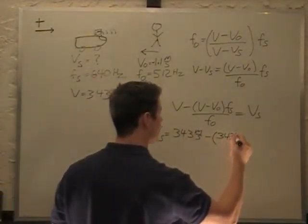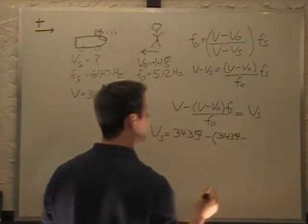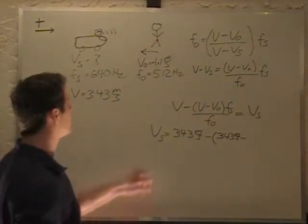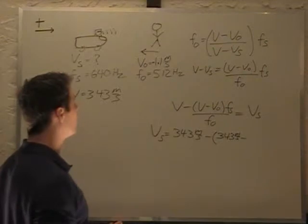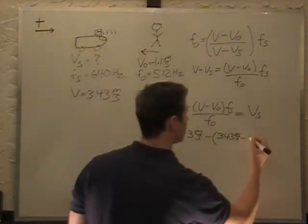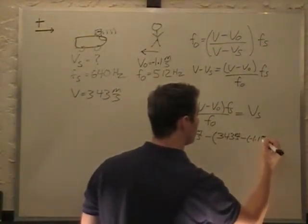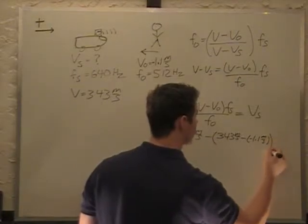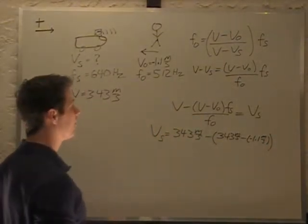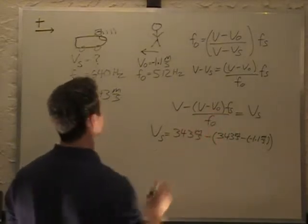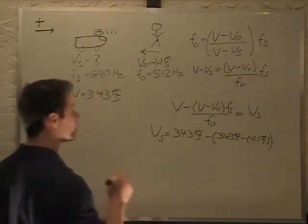minus our observer velocity, which is 1.1 meters per second. So that's negative 1.1 meters per second in brackets. And that's multiplied by our source frequency of 640 Hz.